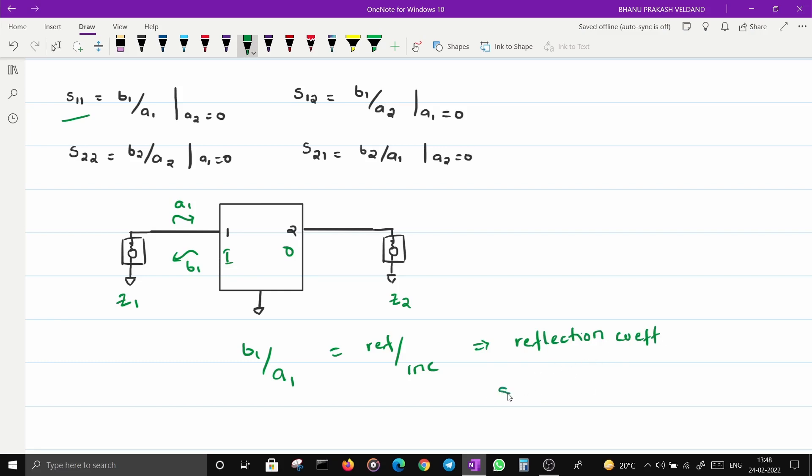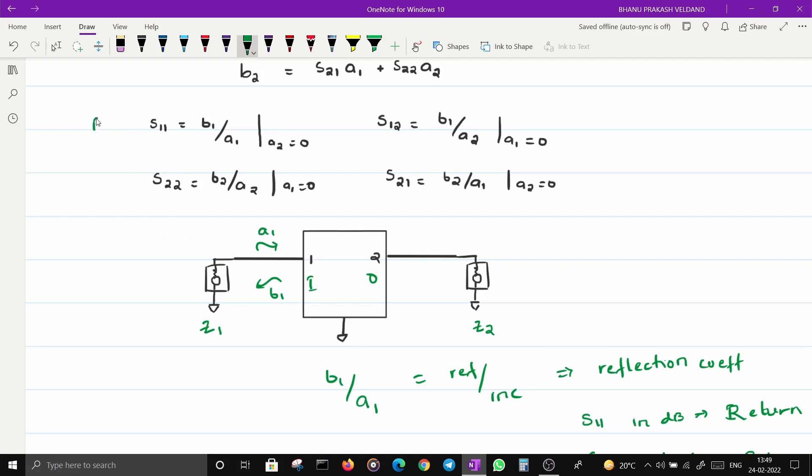So people call it as reflection coefficient—how much is being reflected when I send something. If I express S11 in dB, it is called return loss. How much loss is occurring because of the returning or reflected wave. Same definition for S22: return loss at port two.